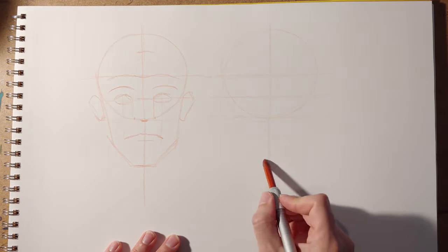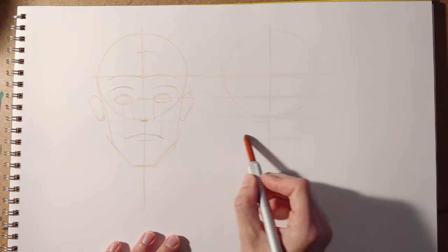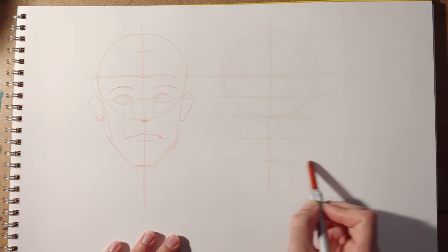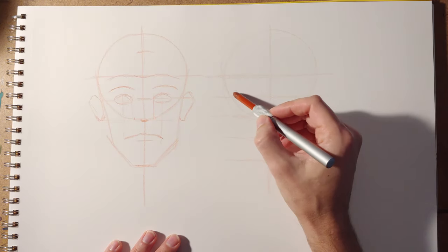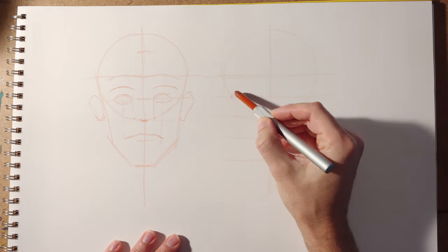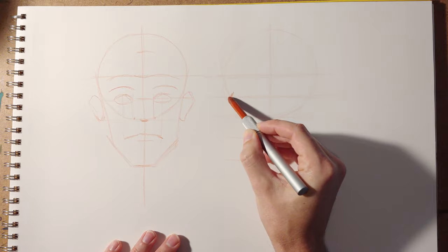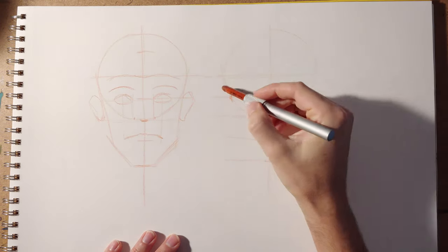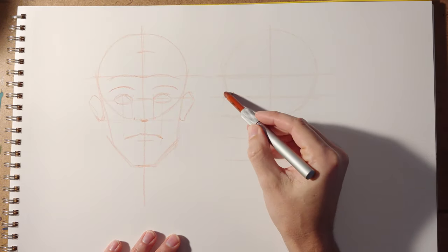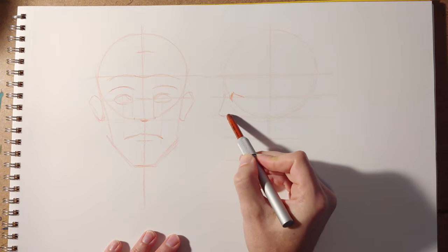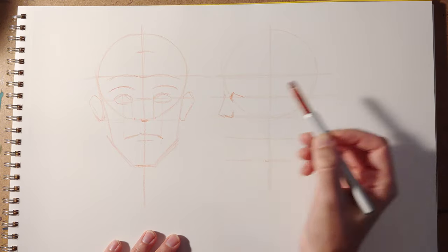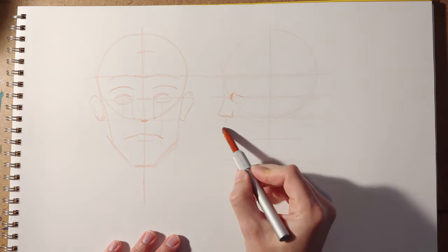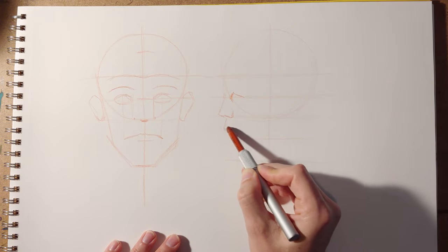So here's an example of that being done in profile. So this time you're just going to extend those lines out all the way just the same. And I like to begin with the eye, and usually the eye will kind of intersect or interrelate somewhere where the eye line hits that circle.